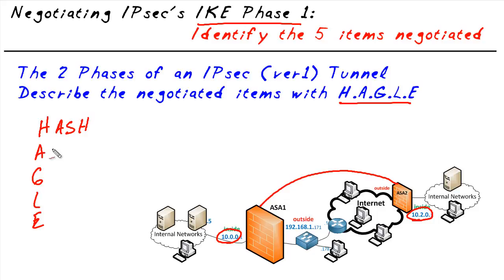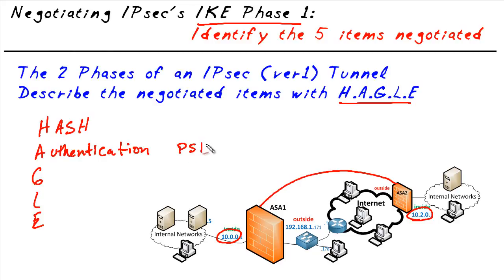The A is for authentication, which represents how we want to make the other device prove who it is. We can do authentication with something like digital certificates, or with pre-shared keys. Either way is fine, as long as both devices agree to the method they're going to use to authenticate each other.